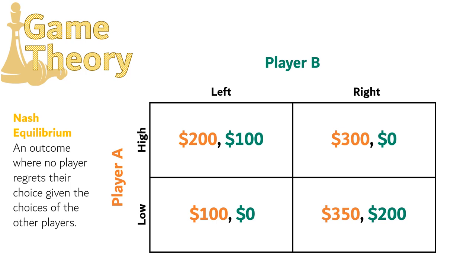What happens if we change the payout for low and right? Let's see if we can find the Nash Equilibrium now. If player A chooses high and player B chooses left, neither player regrets their choice for the same reasons we just discussed, so this one is a Nash Equilibrium. If player A chooses high but player B chooses right, player B will regret their choice — they would have rather chosen left, not right. So that one is not a Nash Equilibrium.